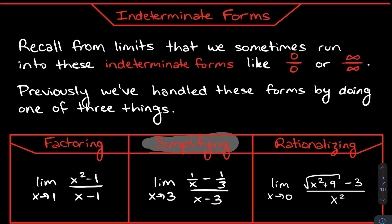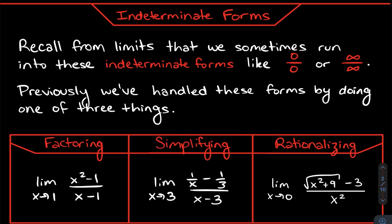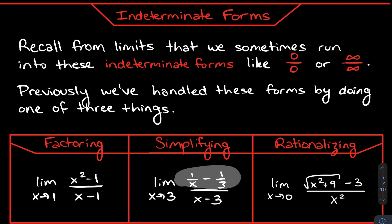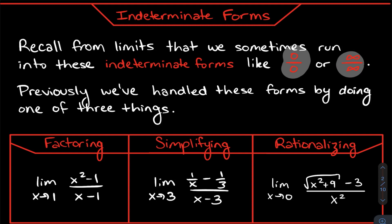The second method is simplifying. With x approaching 3, plugging in gives zero over zero. What we do is find common denominators, move the (x − 3) up to the numerator, do some simplifying and canceling, and we end up with something we can actually determine — no longer zero over zero or infinity over infinity.